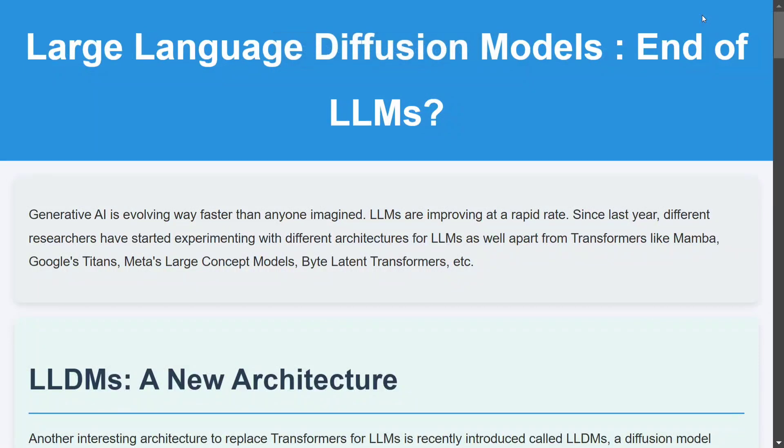Hi everyone, welcome back to Data Science in Your Pocket. There's been a very important paper released around a new architecture proposed for LLMs, that is Large Language Diffusion Models. If you've been in the generative space, you must know that diffusion is a process majorly used for image generation.